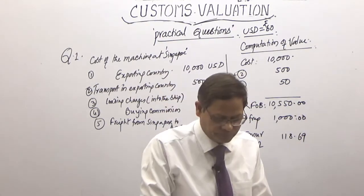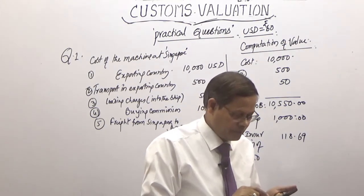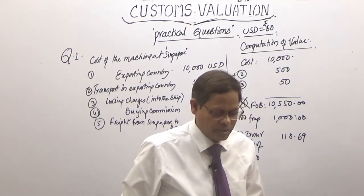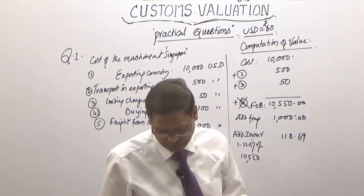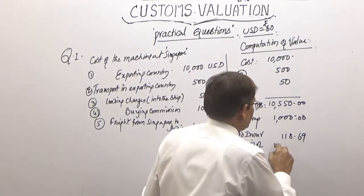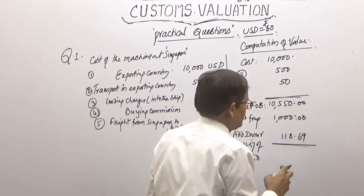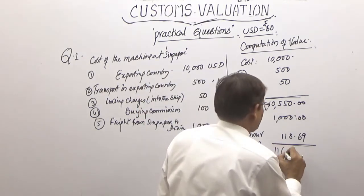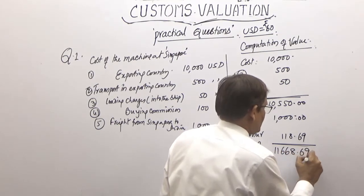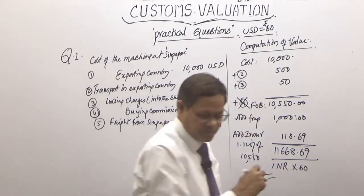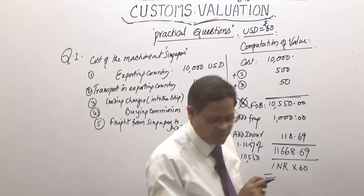Check: 10,550 × 1.125% = 118.6875, rounded off. The total CIF value in USD is 11,668.69. In Indian rupees, multiply by 60, and the assessable value comes to approximately 7,00,121 rupees.